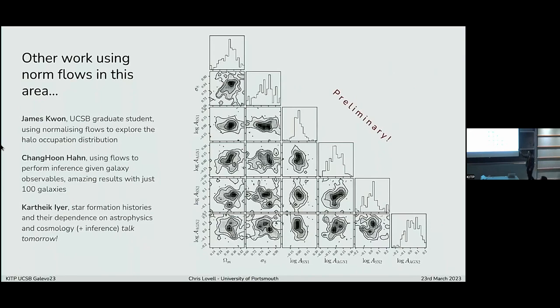I just want to highlight that when I came to this, I thought I was the only person doing this. It turns out everybody's doing this. James Kwan is a UCSB graduate student here, who's also using these normalizing flow techniques to look at halo occupation distribution. Chang-Hoon Han, who gave a really good blackboard talk on these subjects, has also been doing this and produced these preliminary results for galaxy observables. Using 100 galaxies with photometry from Illustris, gets out these posteriors as well. He made me put this very big preliminary sign on this. But it's very exciting application of this. And Kartek's going to chat tomorrow about star formation histories with these sort of techniques as well.